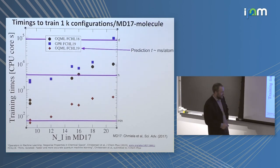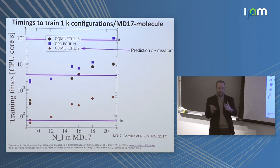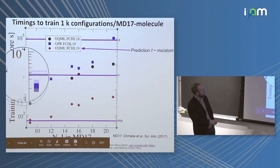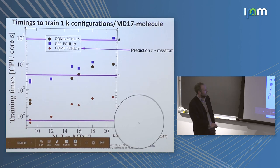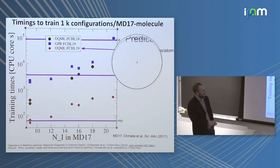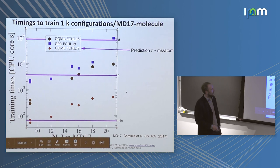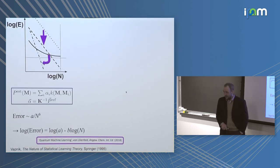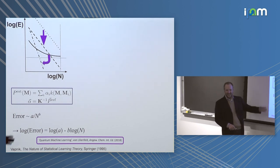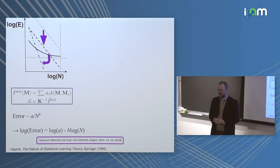Training times are often criticized as slow for kernel methods, but I disagree: if the representation is accurate you don't need much training data, so training can still be very fast — on the range of minutes to less than an hour for these models, depending on the number of atoms in your molecule. And with that I'll stop here — we ran out of time. Thank you for your attention.